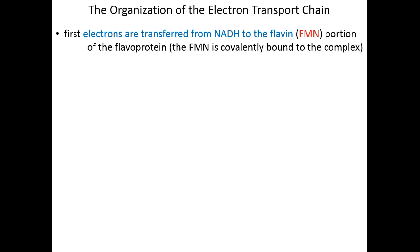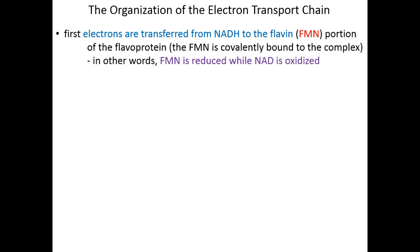At Complex I, electrons arrive from NADH — riding the NADH shuttle. These are the electrons we harvested in glycolysis, the PDC, and the citric acid cycle. Those electrons are transferred from NADH to FMN, the flavoprotein component of Complex I. FMN is receiving those electrons and becoming reduced, while NAD is oxidized. That NAD, in its oxidized form, can then shuttle back to the citric acid cycle to pick up another round of electrons.